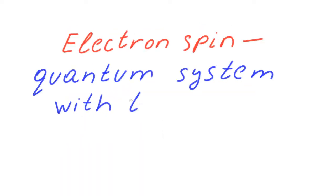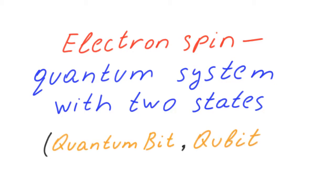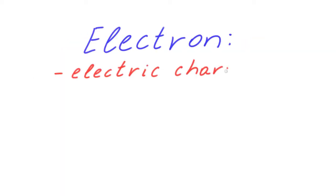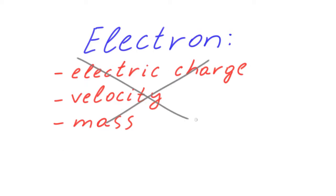An electron spin is one of the physical realizations of a quantum system with two states. A quantum bit, a qubit. Electron also has many characteristics. Electric charge, velocity, mass, position in space. But in relation to spin, an electron is a quantum system with two states.